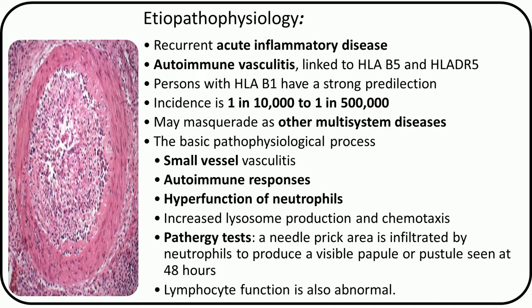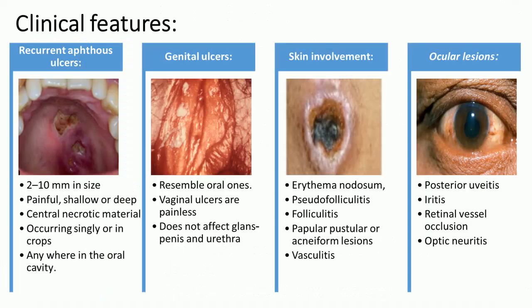Lymphocyte function is also abnormal. Regarding clinical features, patients have recurrent aphthous ulcers which are 2 to 10 mm in size, painful, shallow or deep with central necrotic material, occurring singly or in crops, and can be located anywhere in the oral cavity.